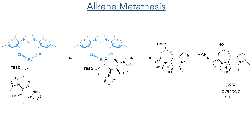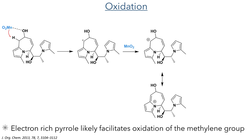The TBS group was then deprotected using TBAF, with a 59% yield achieved over two steps. In the next step of the synthesis, the researchers discovered a rather unusual oxidative cyclisation during attempts to oxidise the allylic alcohol.